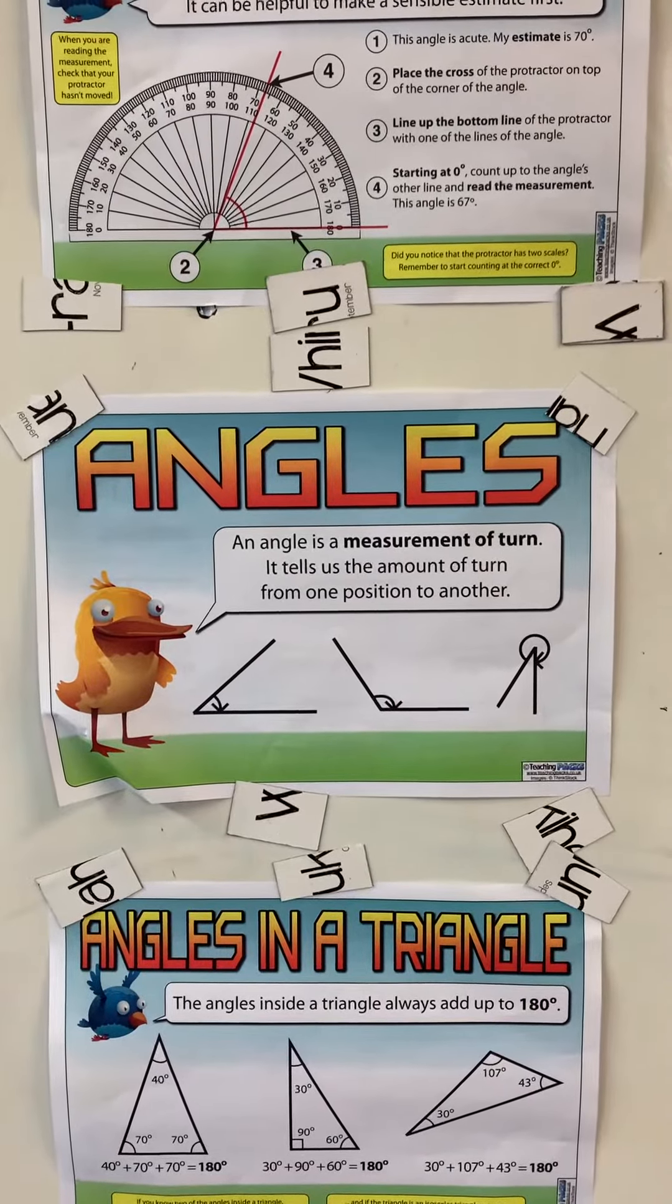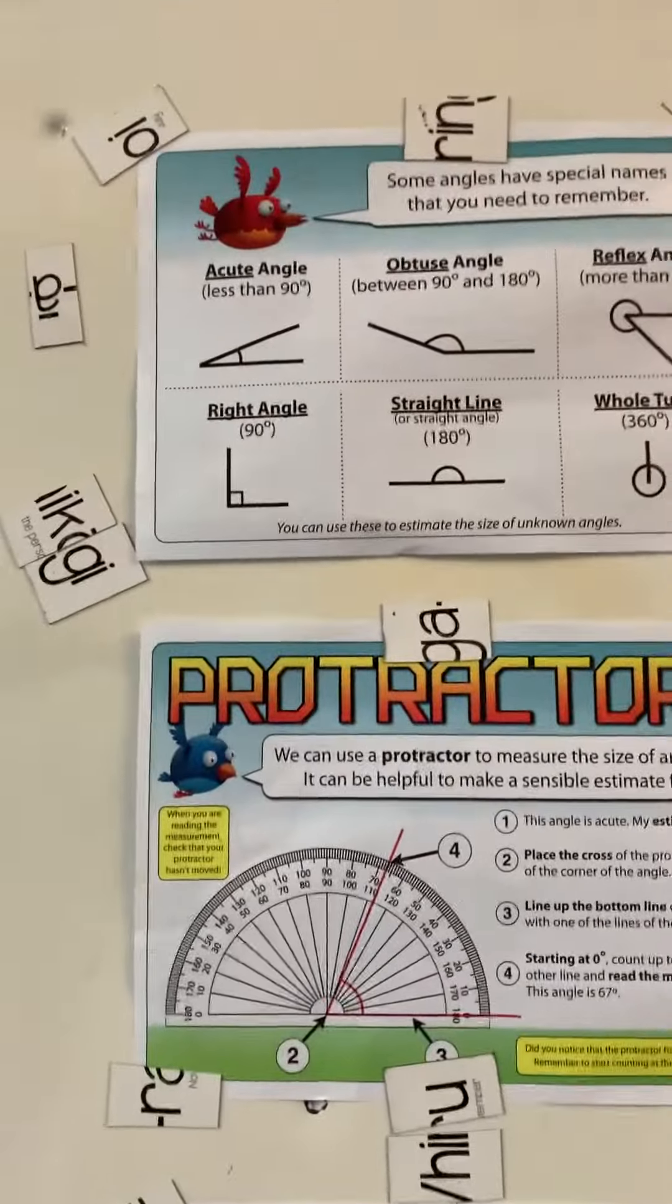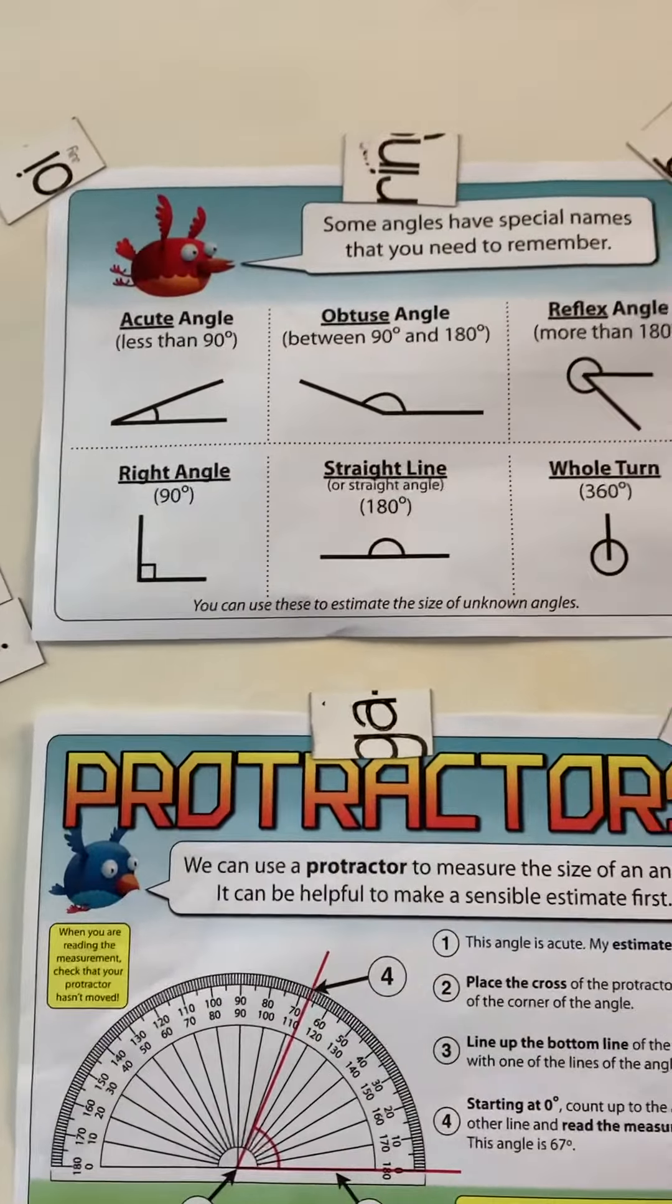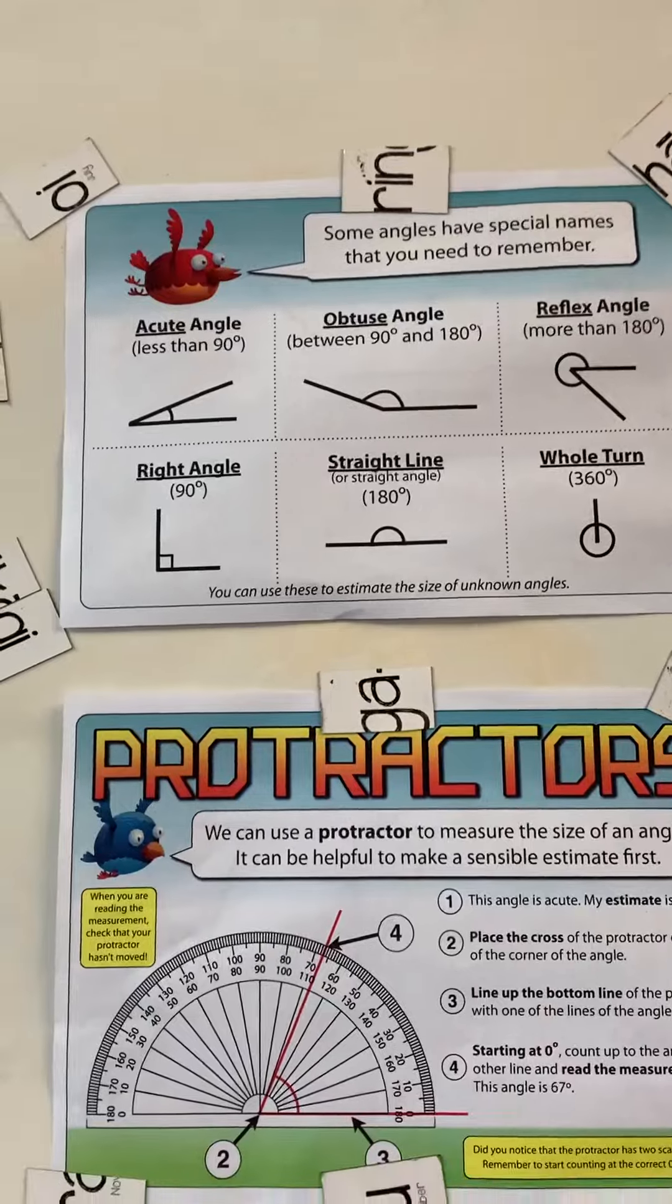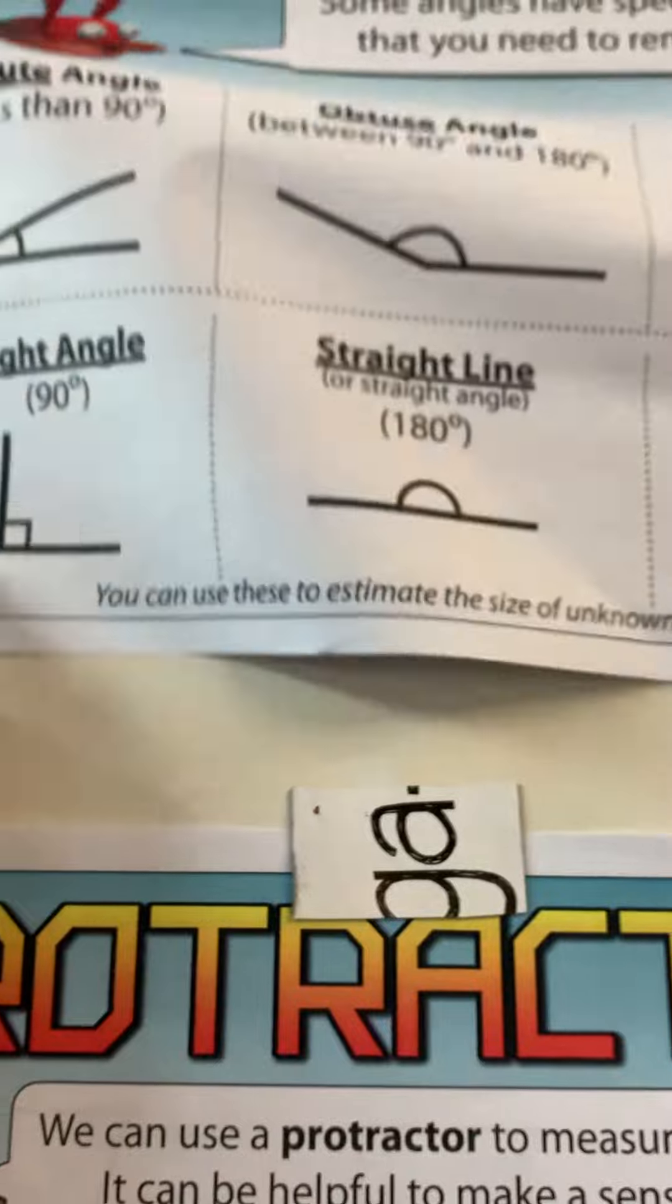So you know how before when I got you to turn to your right and we said 90 degrees, ka pai, that was a right angle. So as you can see over here we've got six types of angles, the one that I just showed you is a right angle. So let's tick that off, we know how to do that.